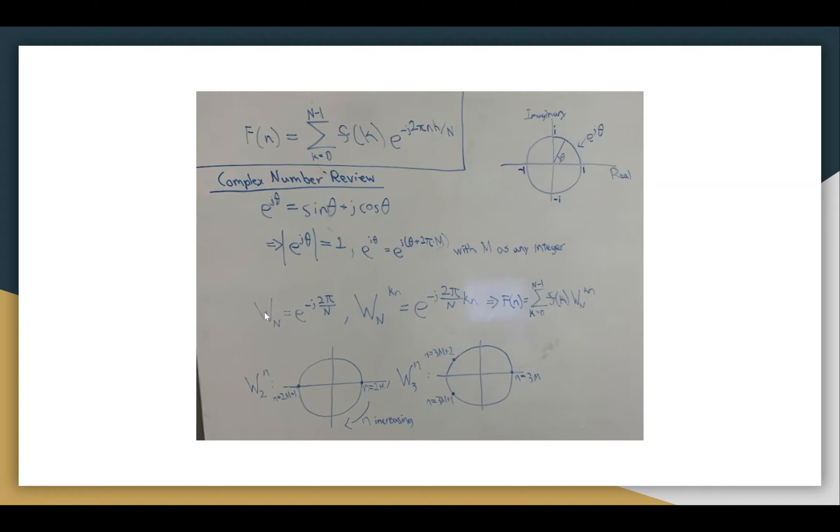We also have w sub n, which is common notation for e to the negative j 2 pi over n power. We can see that for whatever subscript w has, it just breaks up the unit circle into that many chunks. So w sub 4 would be on each of these four points where the axes meet the circle.